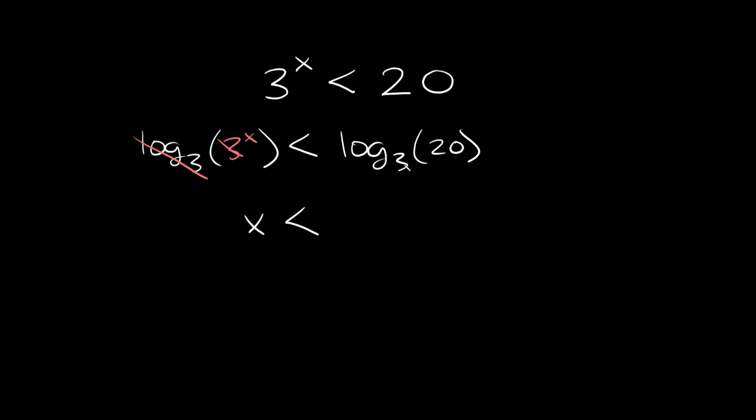Now maybe you could plug this straight into your calculator and get an answer, but if you can't, another way that you can solve for this is by saying that this is equal to log of 20 divided by the log of 3. Basically the log of the big number goes on top and the log of the little number goes on the bottom.